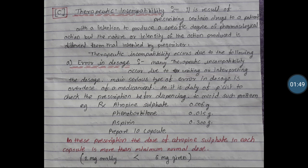So therapeutic incompatibility means it is the result of prescribing a certain drug to a patient with the intention to produce a specific degree of pharmacological action, but the nature or intensity of the action produced is different from that intended by the prescriber. There are some reasons due to which therapeutic incompatibility occurs.